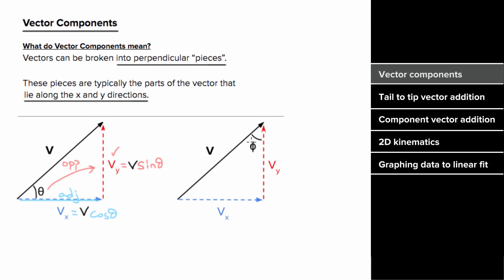If instead we were given a different angle and wanted to determine the vertical component of the total vector, since this vertical component is now adjacent to this angle, we'd write the vertical component as the magnitude of the total vector times cosine of this angle.